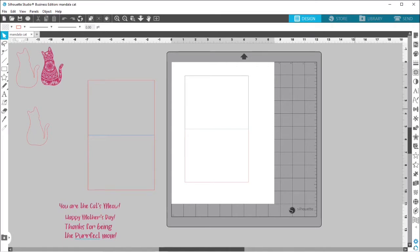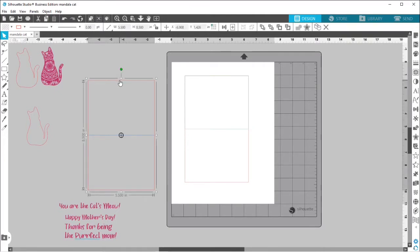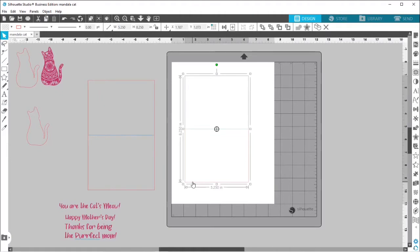I've got a couple things already set up on my screen here. This box over here is going to be my card base, which is 5.5 inches wide by 8.5 inches tall. And then I have this blue score line in the middle.